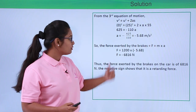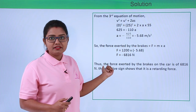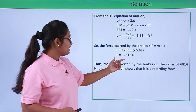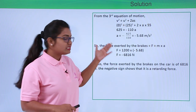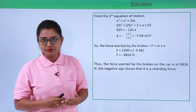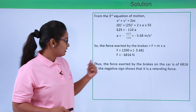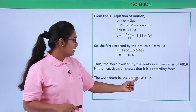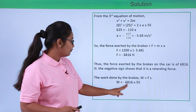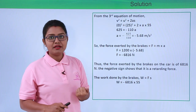This retarding force is what we discussed in the previous chapter on force and laws of motion. Now let us find the work done by the brakes. The work done will also be negative since the force the brakes exert is a negative force. Work done W = F × s, that is force multiplied by displacement.